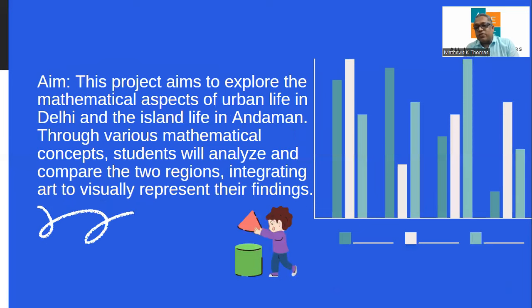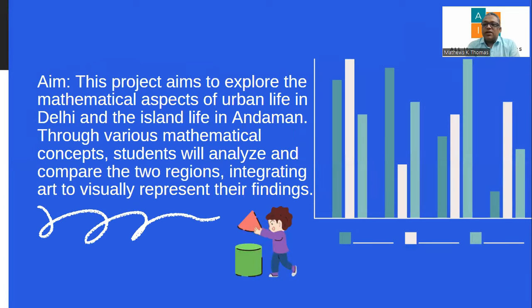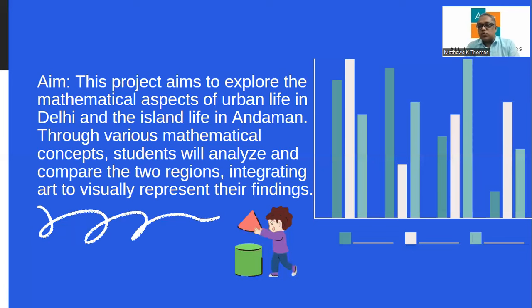The same topic is being given by different subjects, so we are doing the mathematics part. The aim is: the project aims to explore the mathematical aspects of urban life in Delhi and island life in Andamans. We are going to make use of statistics — collecting data like temperature, rainfall, population, climate, tourism, and pollution levels. Students will analyze and compare the two regions and statistically represent this in the form of bar graphs, pie charts, histograms, line graphs, and frequency polygons.